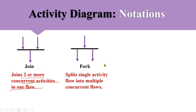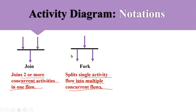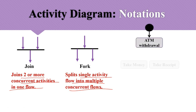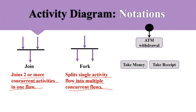The fork node is the opposite: it takes one activity as input and produces multiple activities as output, splitting a single activity flow into multiple concurrent flows. All those concurrent flows must be processed at the same time — 'concurrent' meaning simultaneously. Let's take the example of an ATM withdrawal: after verifying the pin and entering an amount within your balance, the ATM will dispense cash.